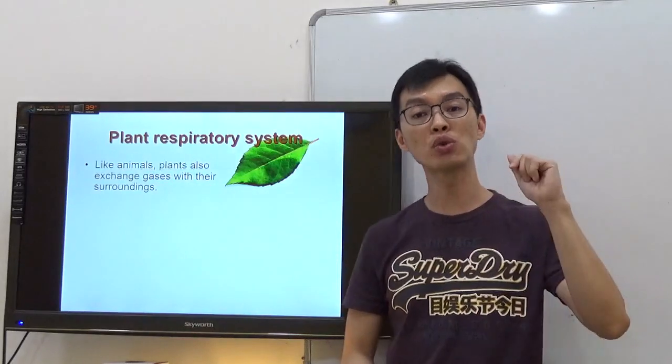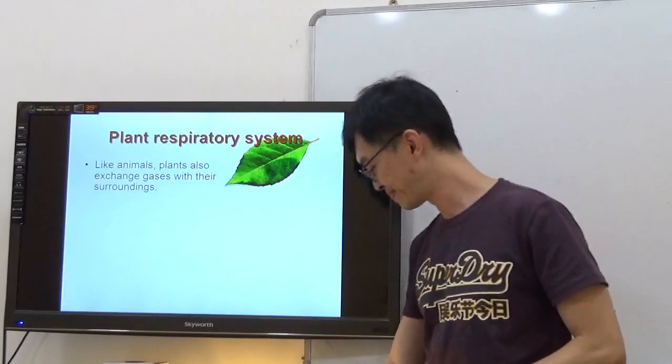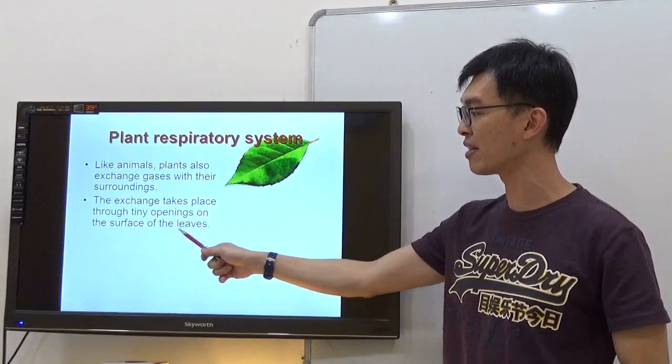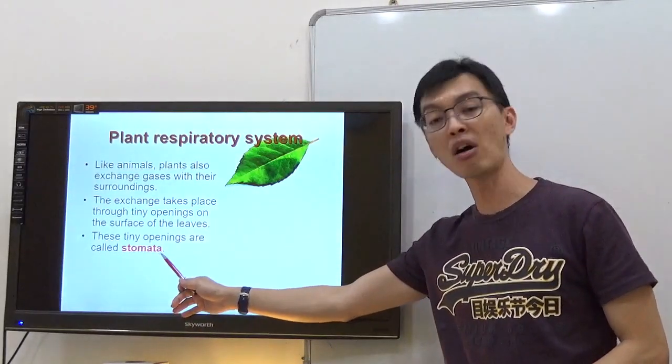Now, plants also do respiration, but they did something more than us. The exchange takes place through tiny openings on the surface of the leaves, and these tiny openings are called stomata.